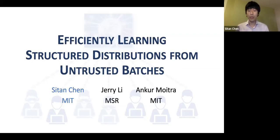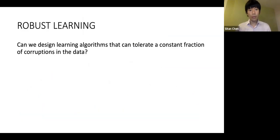Today I'll be talking about efficiently learning structured distributions from untrusted batches, joint work with Jerry Lee and Nakamura. Broadly speaking, this work falls under the umbrella of robust learning, the central goal of which is to design learning algorithms that can tolerate a constant fraction of corruptions in the data.